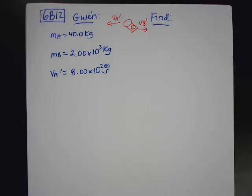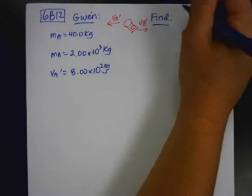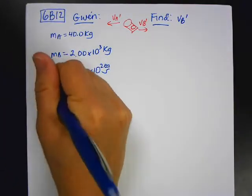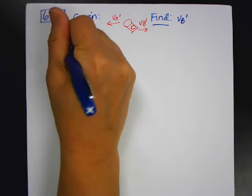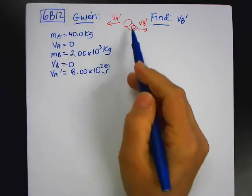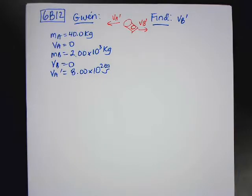What is the recoil velocity of the launcher? So I want to find v_B prime. Now what I didn't write down is v_A is zero and v_B is zero, because initially, the projectile's in the launcher and nothing's moving. Right? They're both at rest.